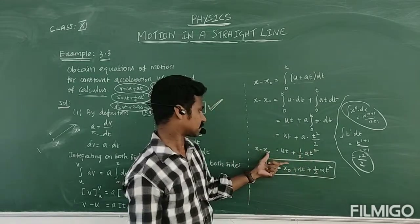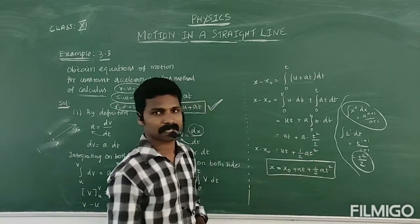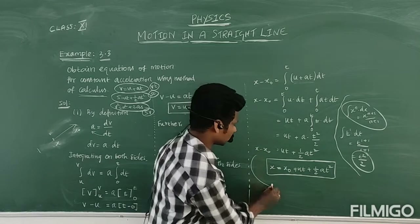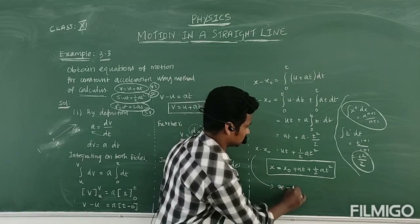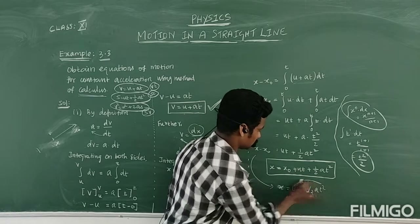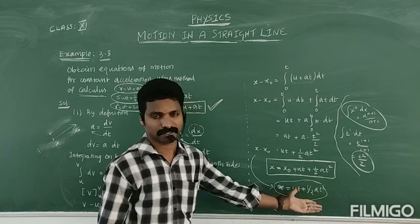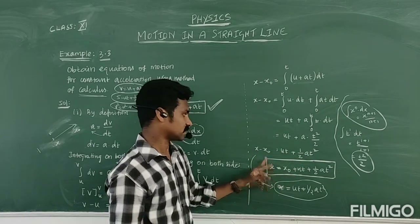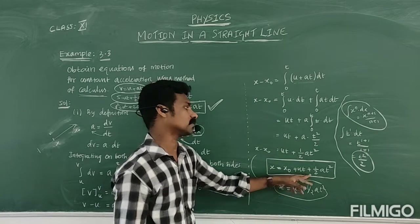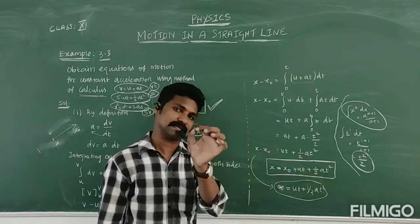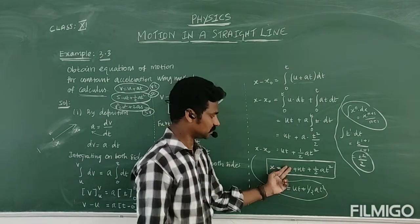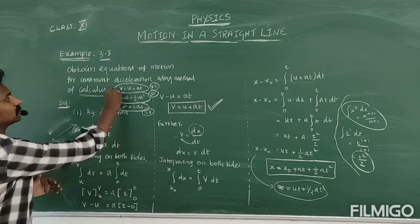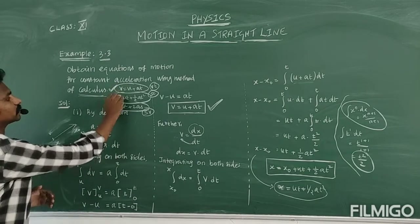Therefore, X minus X₀ equals UT plus half AT squared. If initially there is no displacement, then X₀ equals 0, giving X equals UT plus half AT squared — that is S equals UT plus half AT squared. So we now know two equations: V equals U plus AT, and S equals UT plus half AT squared.